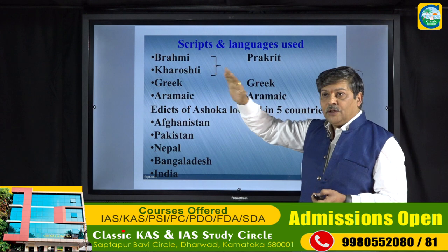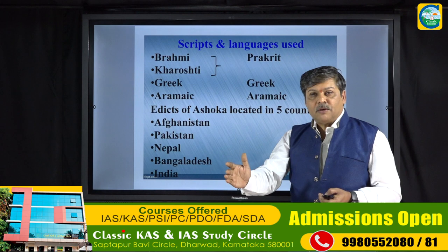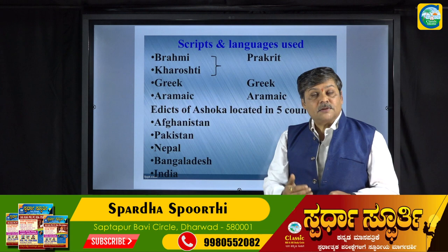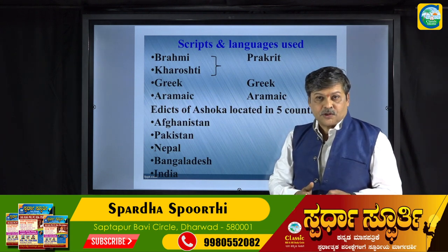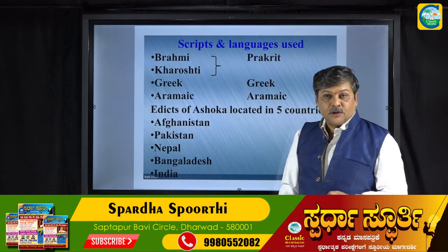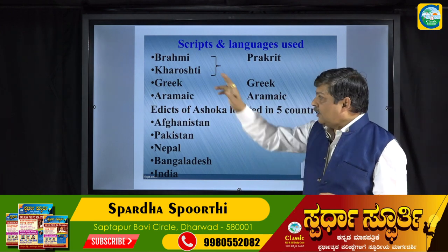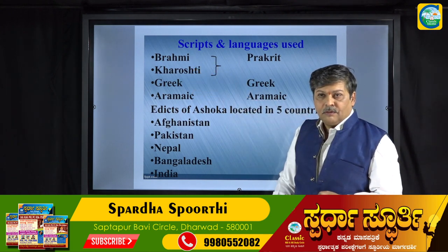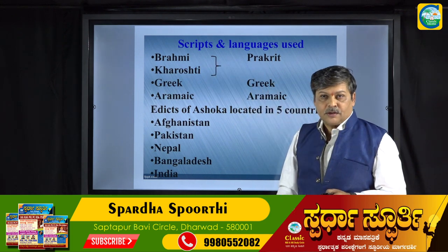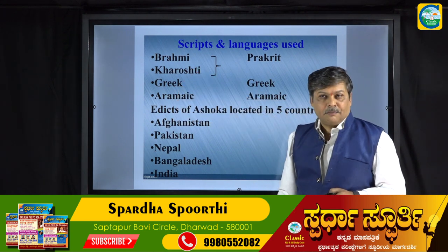This is something you may come across in your examination. They may ask how many scripts have been used, give you the names, and ask which script has not been used in Ashokan inscriptions. Remember the four types of scripts used. But the majority of the inscriptions are in Brahmi script and Prakrit language, whereas a few inscriptions are in Kharoshthi, Greek and Aramaic.